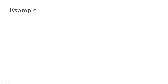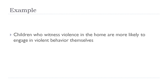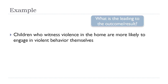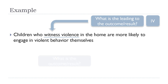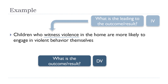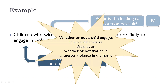So let's use an example to illustrate the difference. Let's say we want to understand whether children who witness violence in the home are more likely to engage in violent behavior themselves. In this case we have two variables. Which one is the one leading to the outcome or result — in other words, which is the independent variable? It's the witnessing of violence in the home, because some children witness violence and others don't. And then the outcome or result — otherwise known as the dependent variable — is engaging in violent behavior, because some children engage in violent behavior and others don't. We want to know whether or not a child engages in violent behaviors depends on whether or not that child witnessed domestic violence in the home.